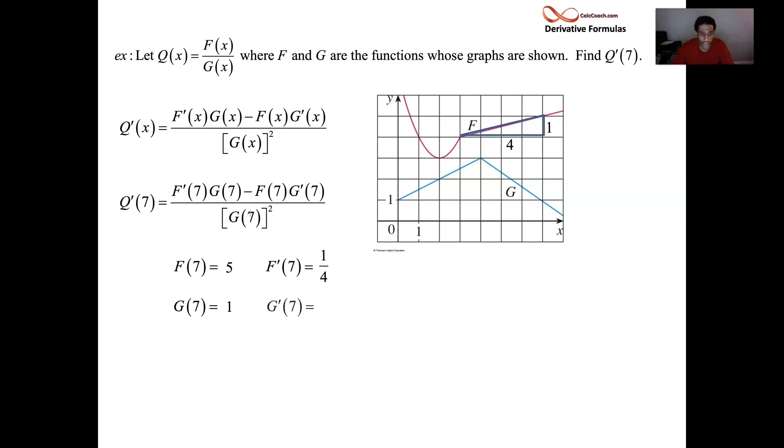Okay. Now, g prime, same thing, linear at 7, drawing a triangle, two corners. This time, you're falling instead of rising. You're going down 2, but you're going over 3. So negative 2 thirds.